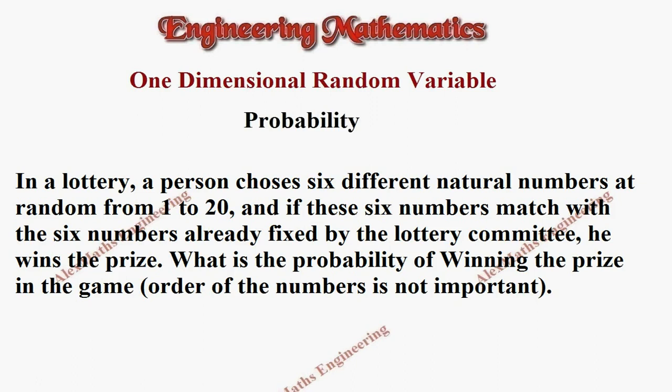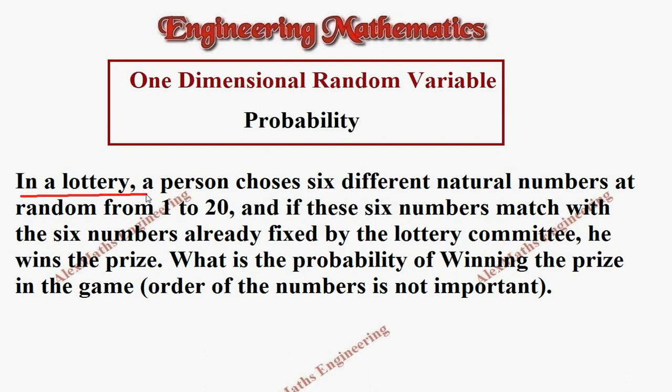Hi students, this is Alex. In this video we are going to solve a one-dimensional random variable problem under probability. The question: in a lottery, a person chooses six different natural numbers at random from 1 to 20.